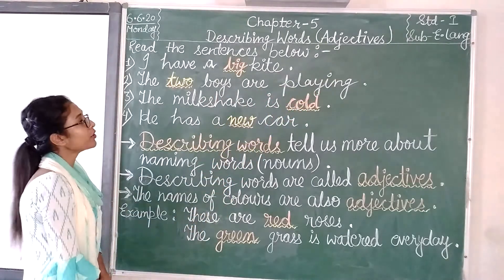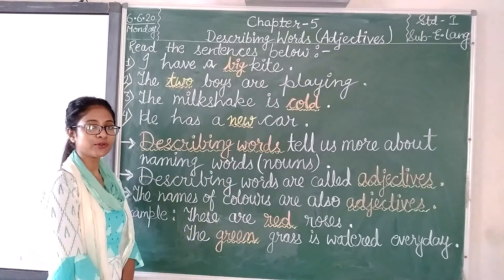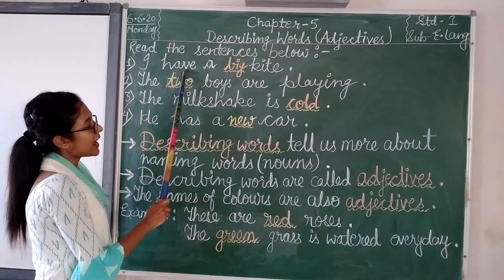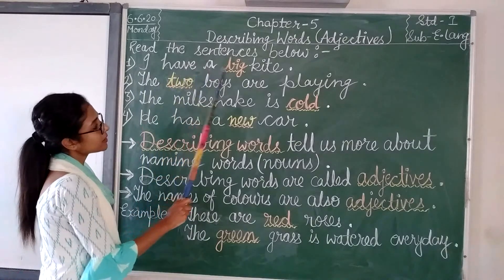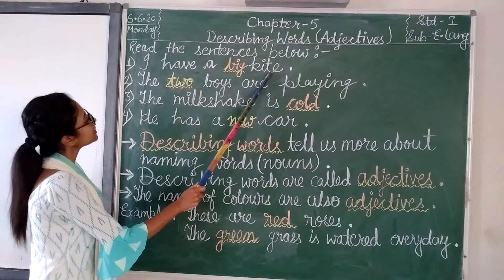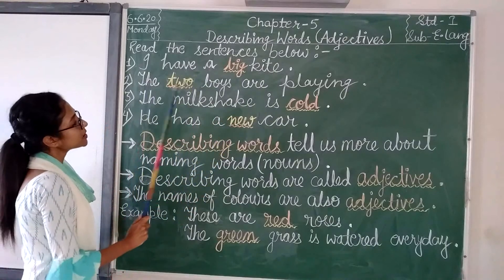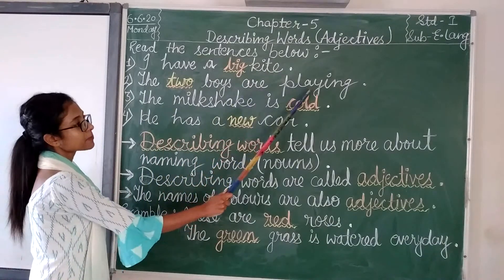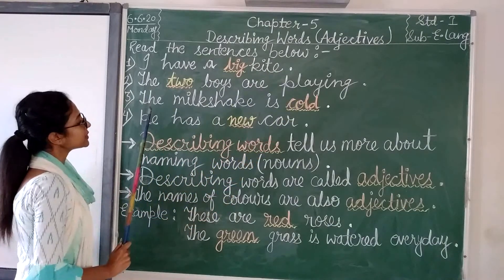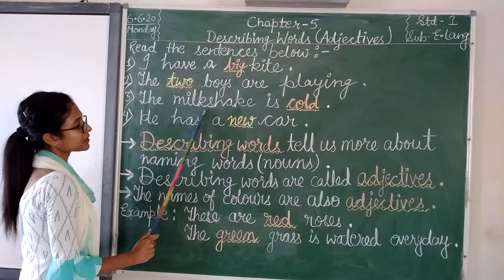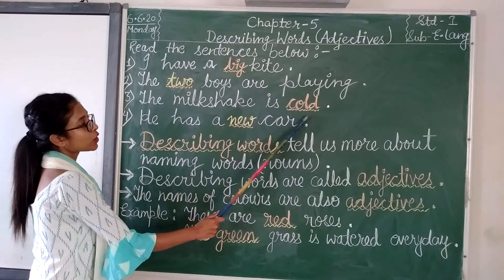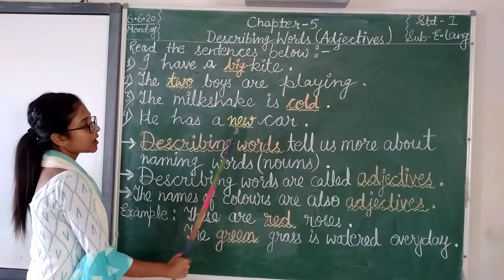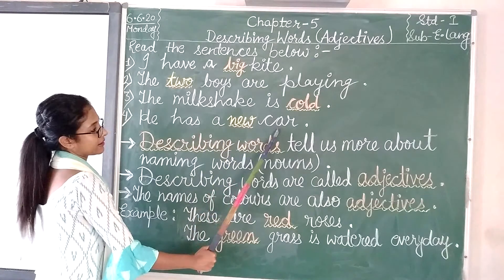Children, I am going to read out some sentences. You all have to repeat it with me. I have a big kite. The two boys are playing. The milkshake is cold. He has a new car.